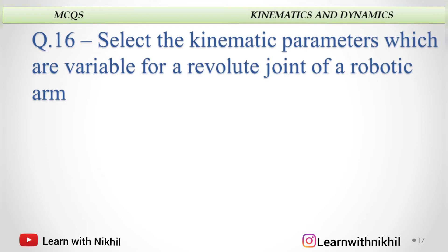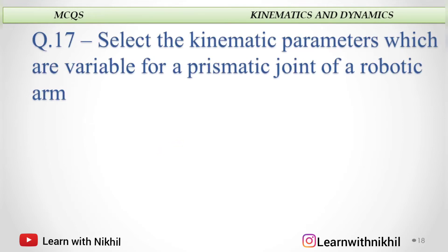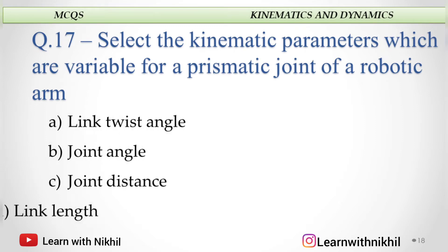Select the kinematic parameter which is variable for a revolute joint of a robotic arm. Options: link twist angle, joint angle, joint distance, or link length. The answer is joint angle. For a prismatic joint, the variable kinematic parameter is joint distance.